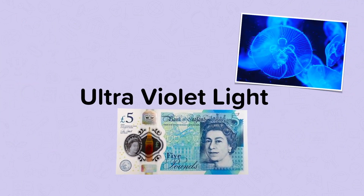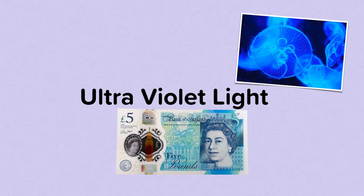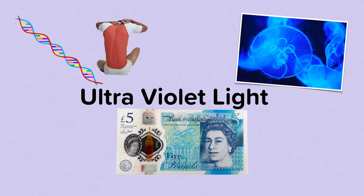Next comes ultraviolet light. It's used for imaging and security dyes — for example, this £5 note glows under UV light. We call this fluorescence. Deep sea creatures like moon jellyfish and sun coral also glow under UV light; this is called bioluminescence. UV does have its dangers: it can lead to sunburn and skin cancer or melanoma, which is why we need to use sun cream in the summer.